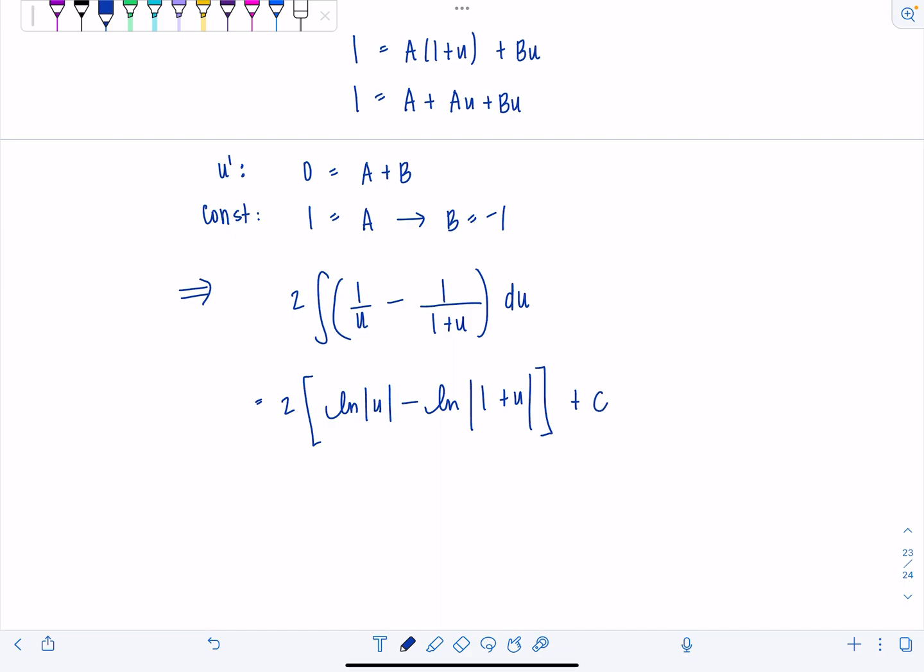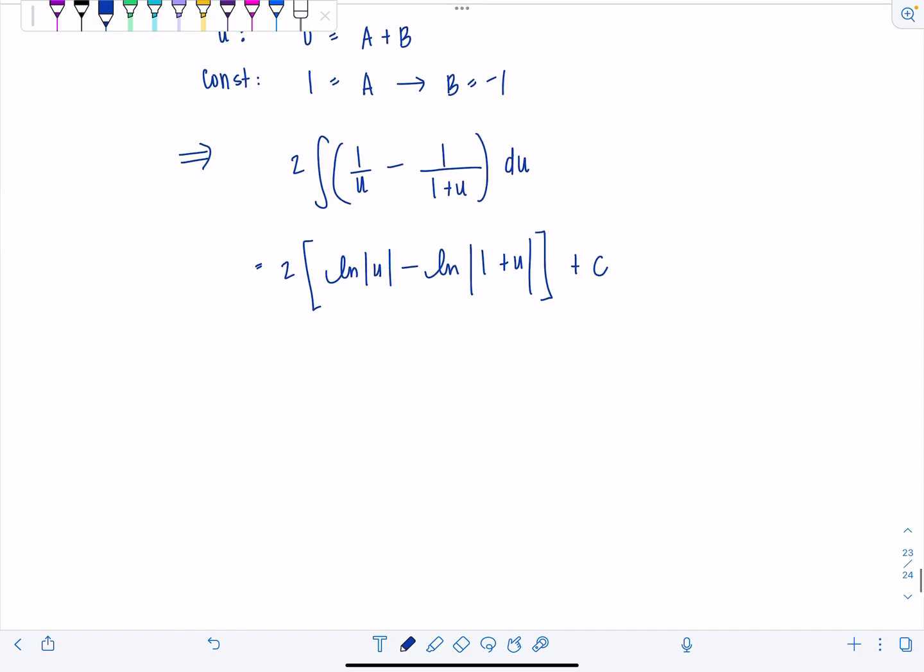And then we can definitely combine both of these natural logs into a single logarithm. So I'm going to write this as 2 natural log absolute value of u over 1 plus u plus c.